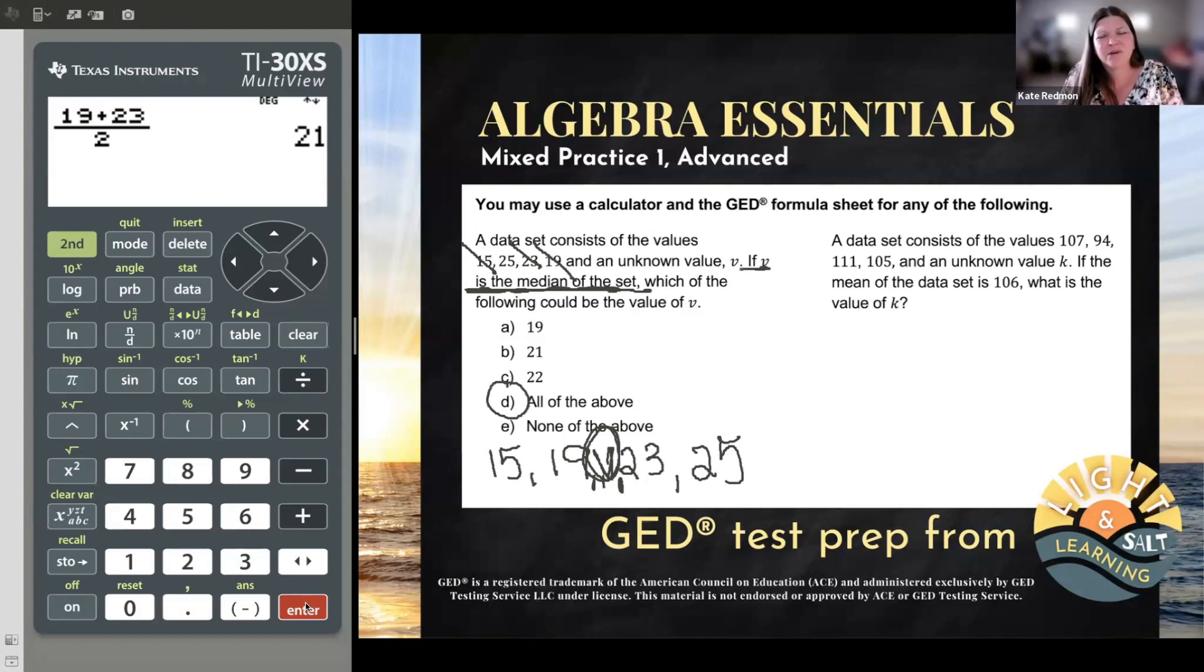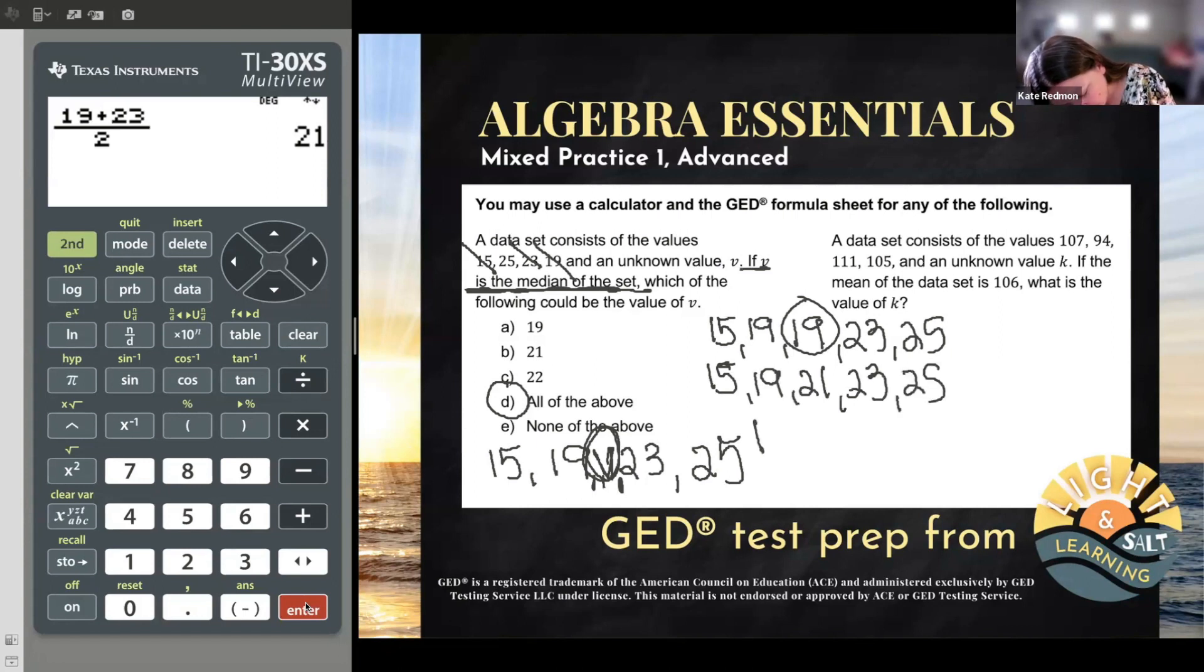If you're still not tracking with me, like if you're tracking with me, just go on to the next example. But for those of you who are like, Kate, that does not make sense, I'm just going to show you what I mean by plugging in each of those numbers. You could have had 15, 19, had V be 19, 23, and 25, and it would still have been in the middle. Same thing with the other two options. 21 is also between 19 and 23, and so is 22. So all of those are possible options.